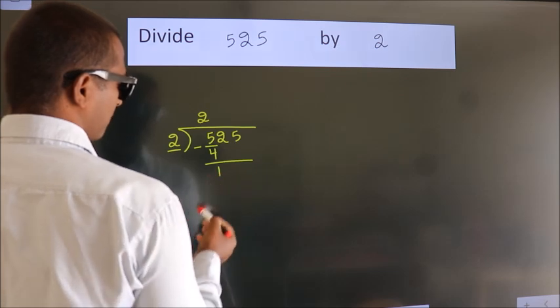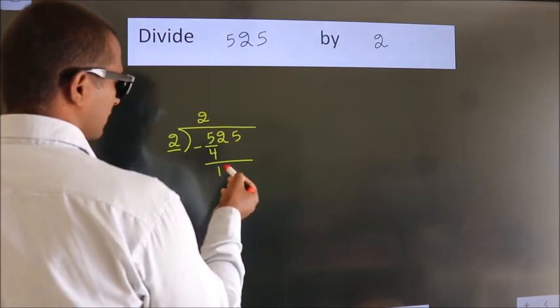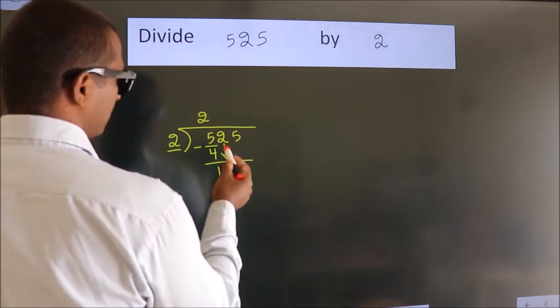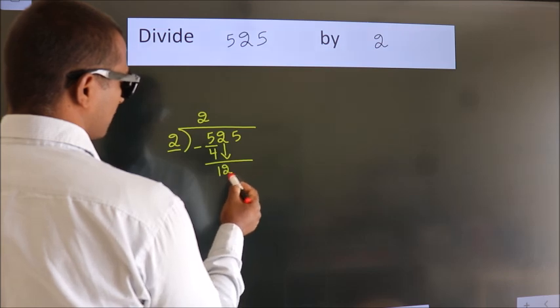We get 1. After this, bring down the beside number. So, 2 down. So, 12.